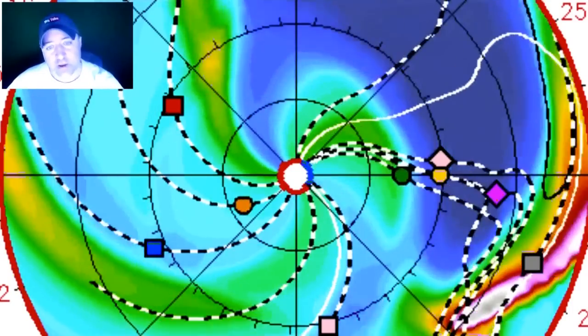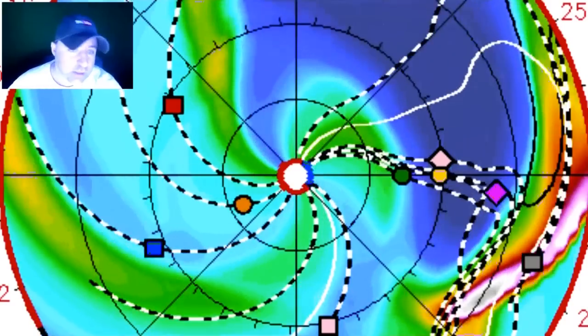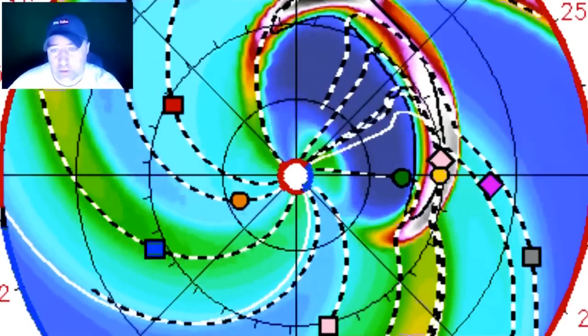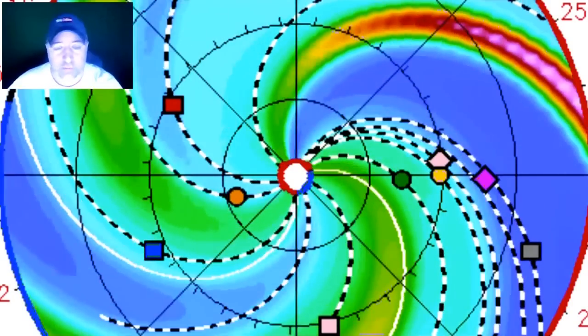Giant Sunspot AR-1944 erupted January 7th in approximately 1832 UTC, producing a powerful X-Class 1 Solar Flare. Let's see, they've got more information to follow.